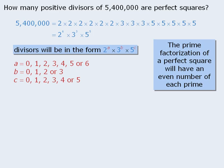So the possible values of a can be only 0, 2, 4, or 6, which means we can eliminate the other possibilities. Similarly, b must be an even number, so it can be only 0 or 2. And finally, c can be only 0, 2, or 4.